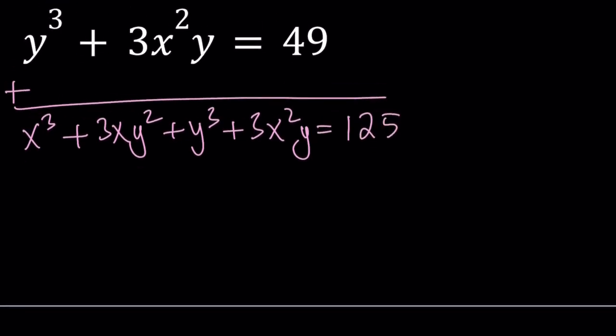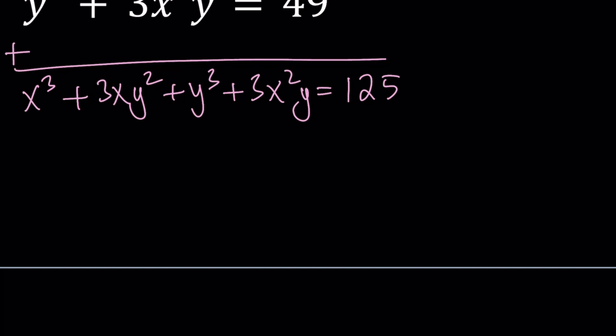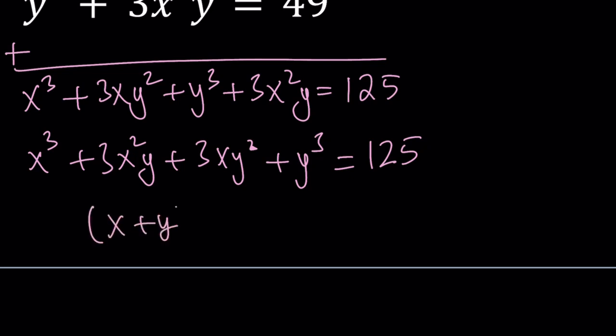Having 125 on the right-hand side is nice because it's a perfect cube. Now let's arrange these terms so they look better: x cubed plus 3x squared y plus 3xy squared plus y cubed equals 125. If you said that the left-hand side is equivalent to x plus y quantity cubed, then you're right.